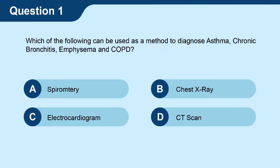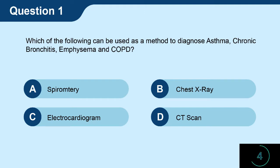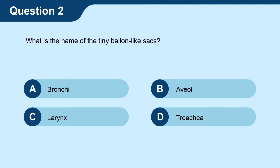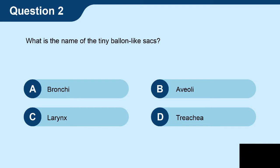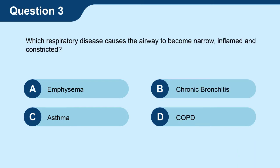Question one: which of the following can be used as a method to diagnose asthma, chronic bronchitis, emphysema, and COPD? Question three: which respiratory disease causes the airway to become narrow, inflamed, and constricted?